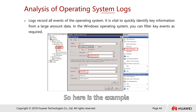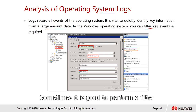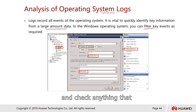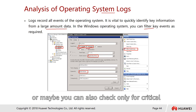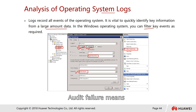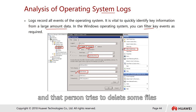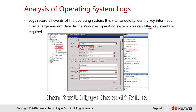Now for operating system logs: because the OS collects a large amount of data every day, it is useful to apply a filter. You can filter current logs to show only Critical and Warning level events. You can also type in a keyword such as 'Audit Failure.' Audit Failure means, for example, if someone not authorized tries to delete a file on a server, that action will trigger an audit failure event.